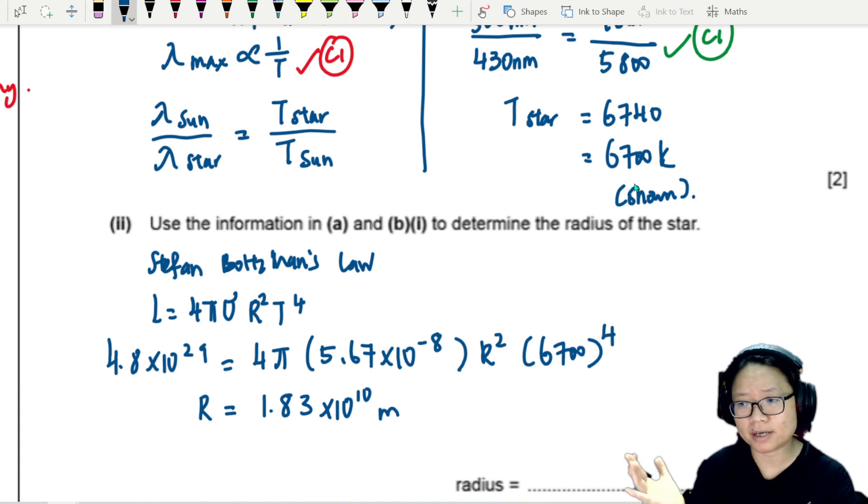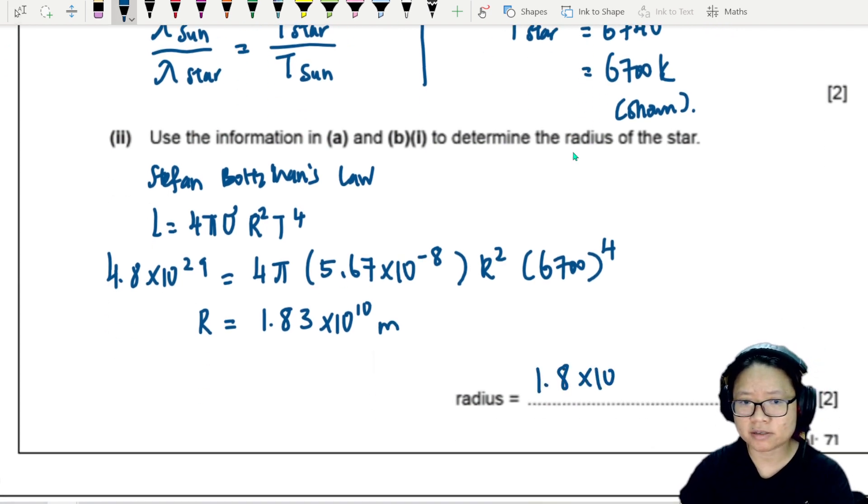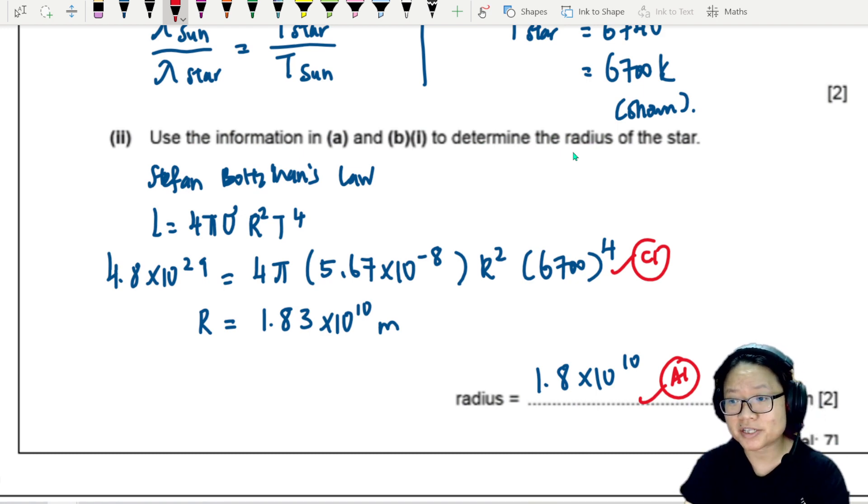If you press your good old friend Casio calculator, this will be 1.83 times 10 to the power 10 meters. These numbers are going to be really big because we're talking about stars. 1.8 times 10 to the power 10 meters, and that's it. Pretty straightforward. If you substitute everything correctly, you get one mark. If your final answer has no calculator error, you get a second mark.